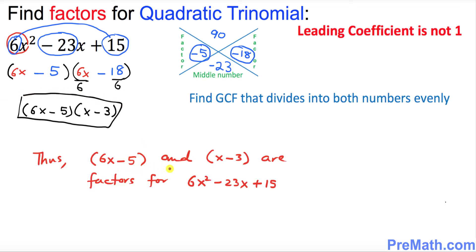Thus, (6x - 5) and (x - 3) are our factors for this given trinomial. Thanks for watching and please subscribe to my channel for more exciting videos.